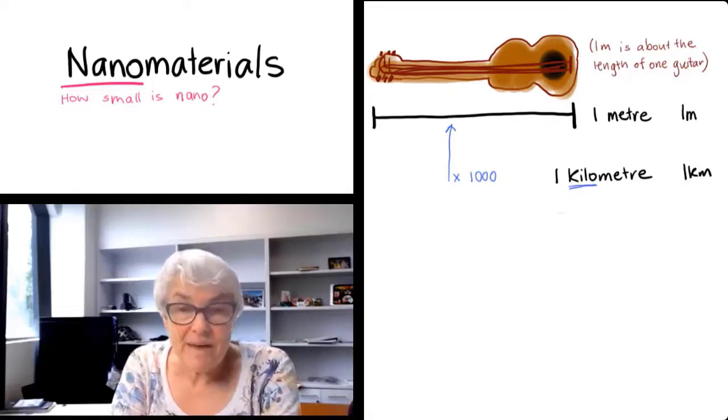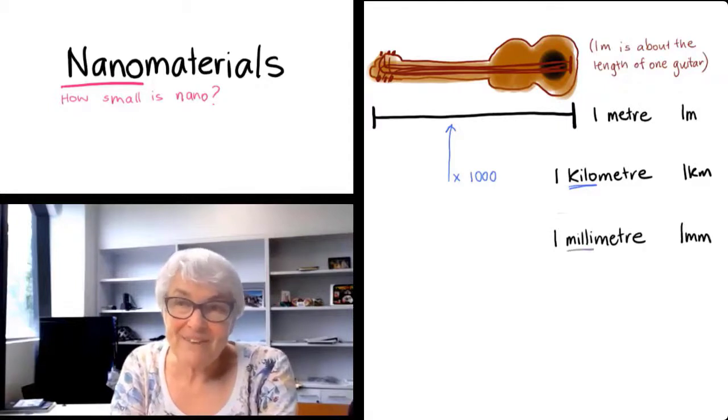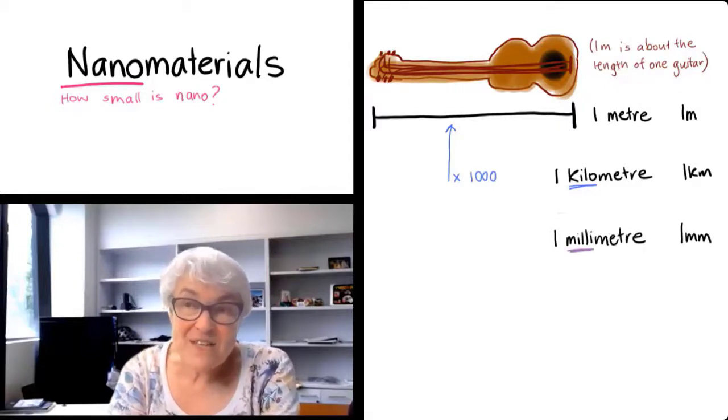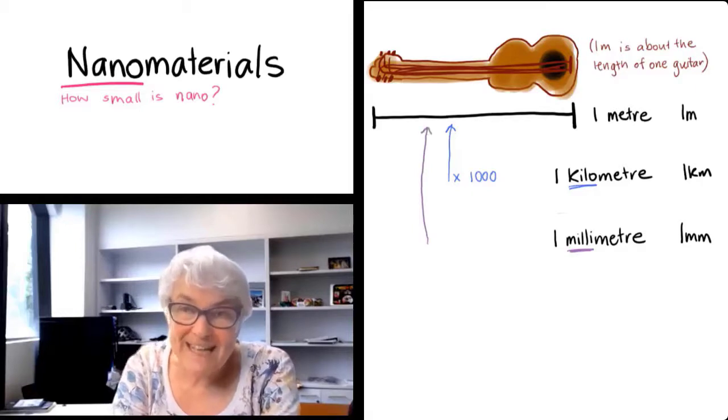If we think about a millimeter, we're thinking about a thousandth of a meter. So milli means divide by a thousand.